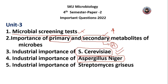Coming to the fifth and last question in unit 3: the industrial importance of Streptomyces. These are the first three key organisms at the industry level. This concludes unit 3.